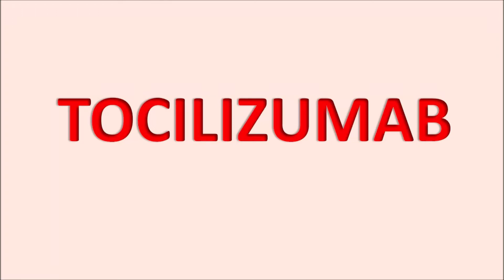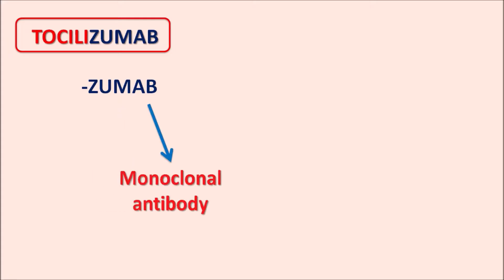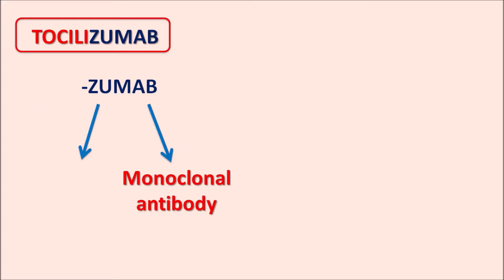Hi everyone. Today in this video we are going to discuss about tocilizumab. What is this drug tocilizumab? Here we can draw the suffix 'zumab' and the last three letters 'mab' indicate monoclonal antibody. The letters 'zu' indicate this drug is humanized. So tocilizumab is a humanized monoclonal antibody.